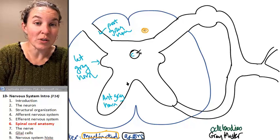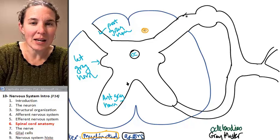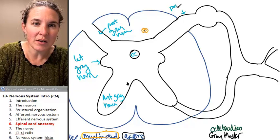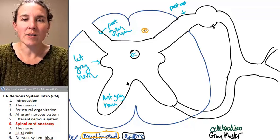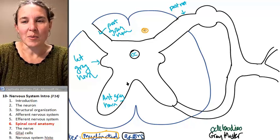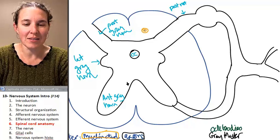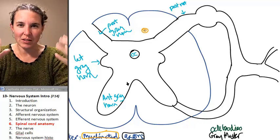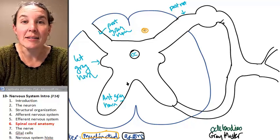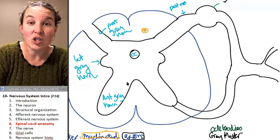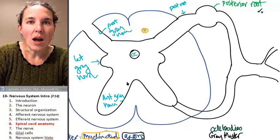Might as well do my central canal while we're here. My posterior gray horn does its thing and becomes a posterior root. This is a posterior root. And guess what this little blobby thing is. You know those things in oak trees where all of a sudden an oak tree starts getting these big old blister looking things? Like the wood actually blisters out because I think there's wasps in there or something. That's what this looks like to me. But it isn't that. There are no wasps in there. This is called the posterior root ganglion.